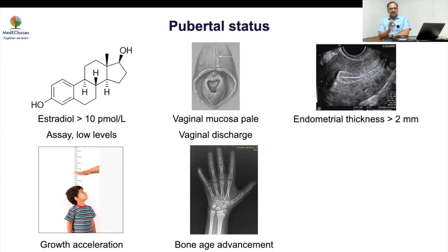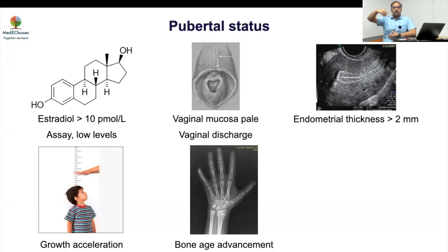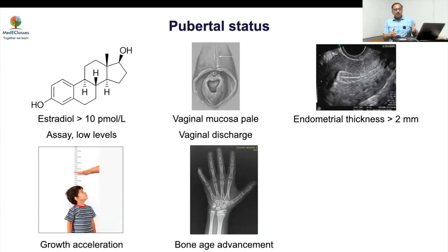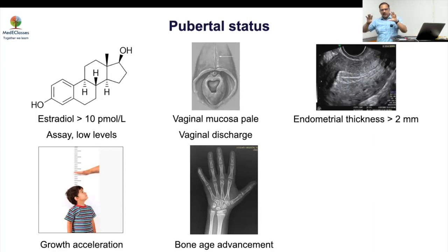Predicted adult height is used but tends to overestimate in precocious puberty — in one study, it was 4–5 cm higher than actual final height. Bailey-Pinneau tables offer normal and advanced predictions, but still over-predict. The best combined parameter for height and bone age is height SDS for bone age; alternatively, if bone age is more than 120% of height age, that is significant.